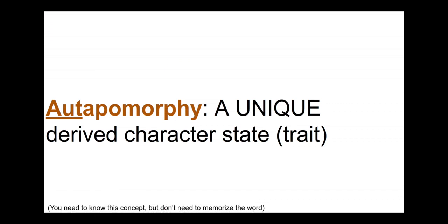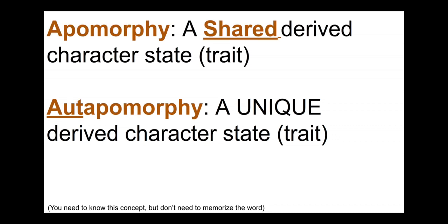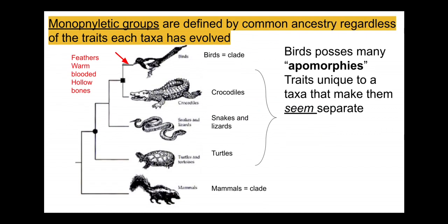An autapomorphie is a unique derived character trait specific to a taxonomic group: feathers are an autapomorphie unique to birds, warm-bloodedness is an autapomorphie unique to birds, and hollow bones is an autapomorphie. That contrasts with a synapomorphie, which is a shared derived characteristic — scales, for instance, are shared by snakes, lizards, crocodiles, and birds (birds have scales on their legs, and feathers are derived scales).